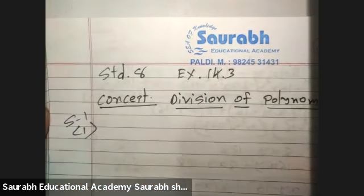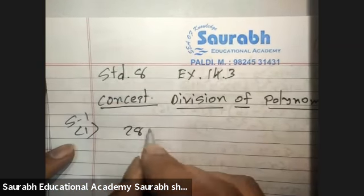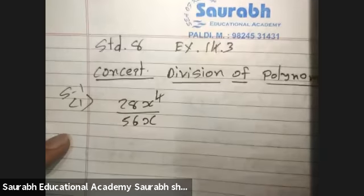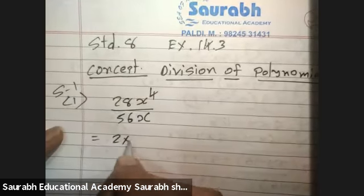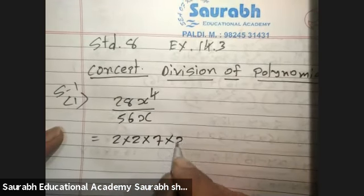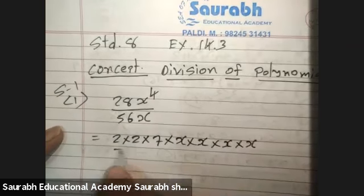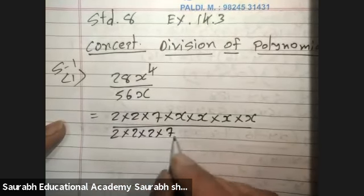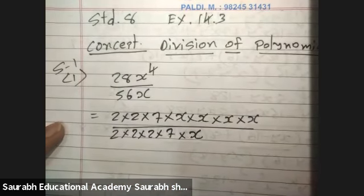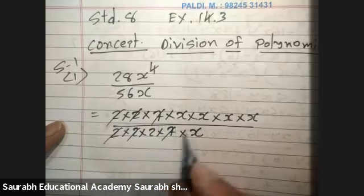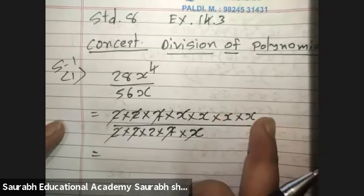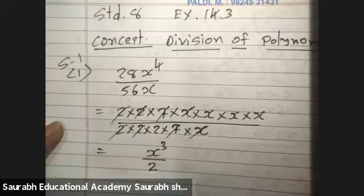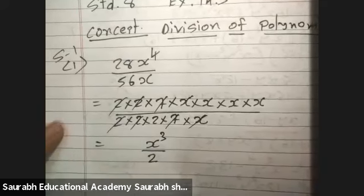Number one: 28x raised to 4 divided by 56x. Now 28 means 2 times 4 times 7, and x four times, upon 56 which is 2 times 4 times 8 times 7, into x. We can cut 2 to 2, 7 to 7, and x to x. So what we get on the numerator is x times x times x, that is x cube, and the denominator is only 2. So the answer is x cube by 2. Very easy.